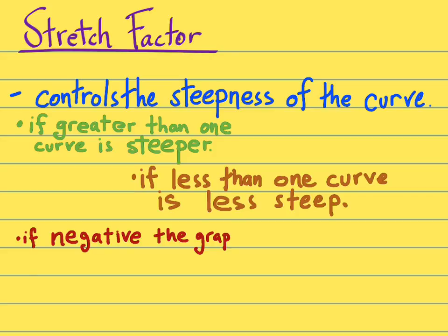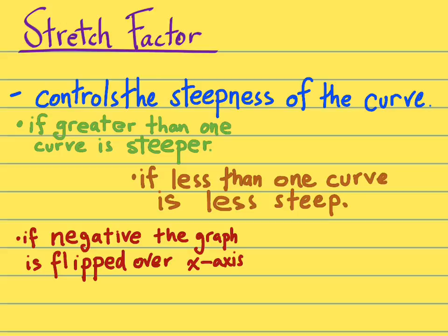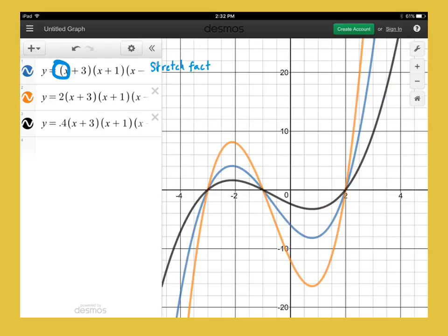If the stretch factor number is negative — less than zero — then it flips the graph over the x-axis. It reverses the orientation of the graph. It could also make it steeper or compress it at the same time as reflecting it. So a stretch factor can sometimes have two effects on the graph simultaneously.